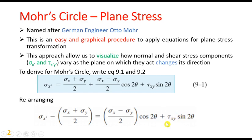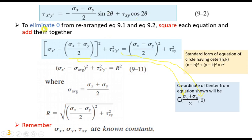Looking at these equations, the rearranged equation 9.1 and equation 9.2, you will find that on the right side, theta is involved. To eliminate theta, we square both rearranged equations and add them together. We get the result: (sigma x prime minus (sigma x plus sigma y)/2)² + (tau x prime y prime)² equals (sigma x minus sigma y)/2)² plus tau xy².